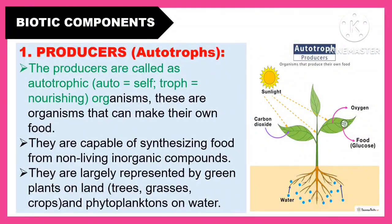The producers are called autotrophic. Auto which means self and troph which means nourishing organisms. These are organisms that can make their own food. They are capable of synthesizing food from non-living inorganic compounds. They are largely represented by green plants on land such as trees, grasses and crops, and phytoplanktons on water.